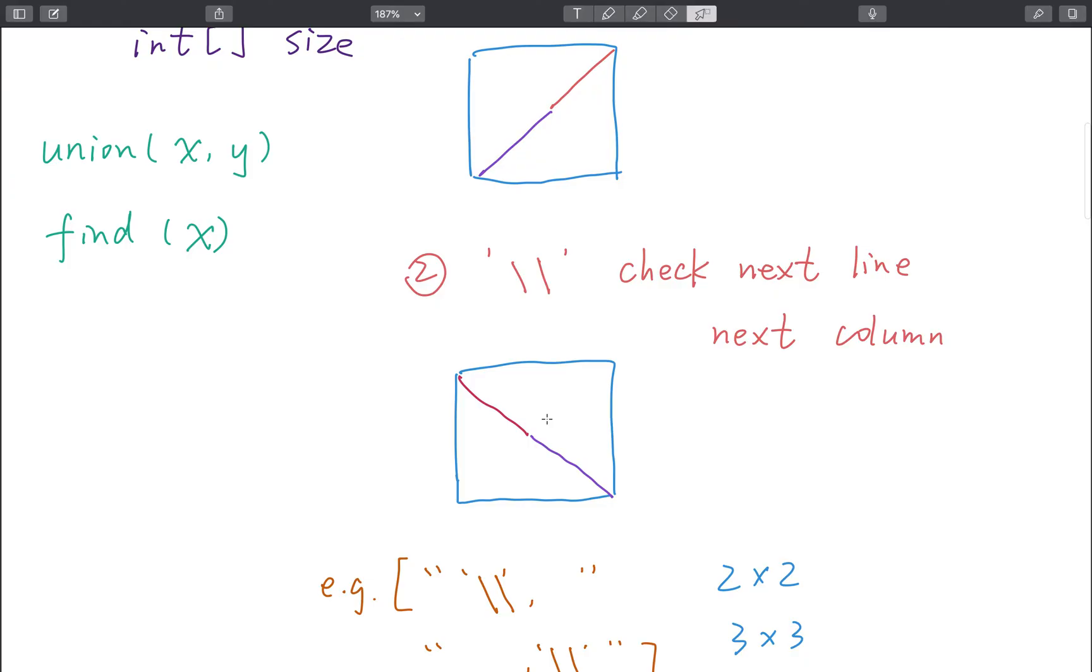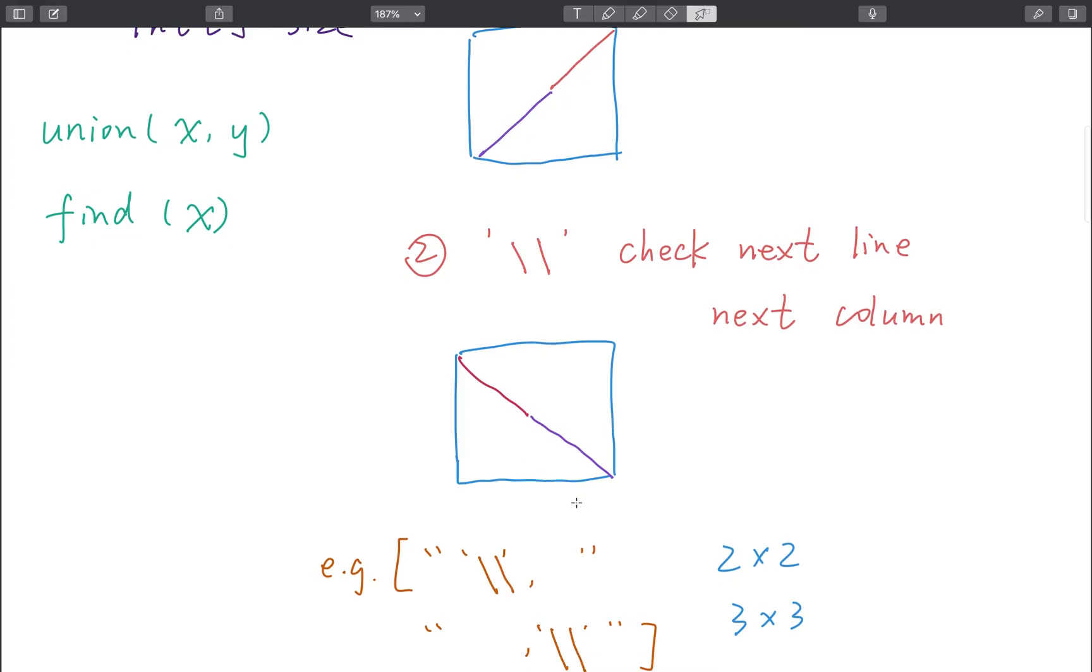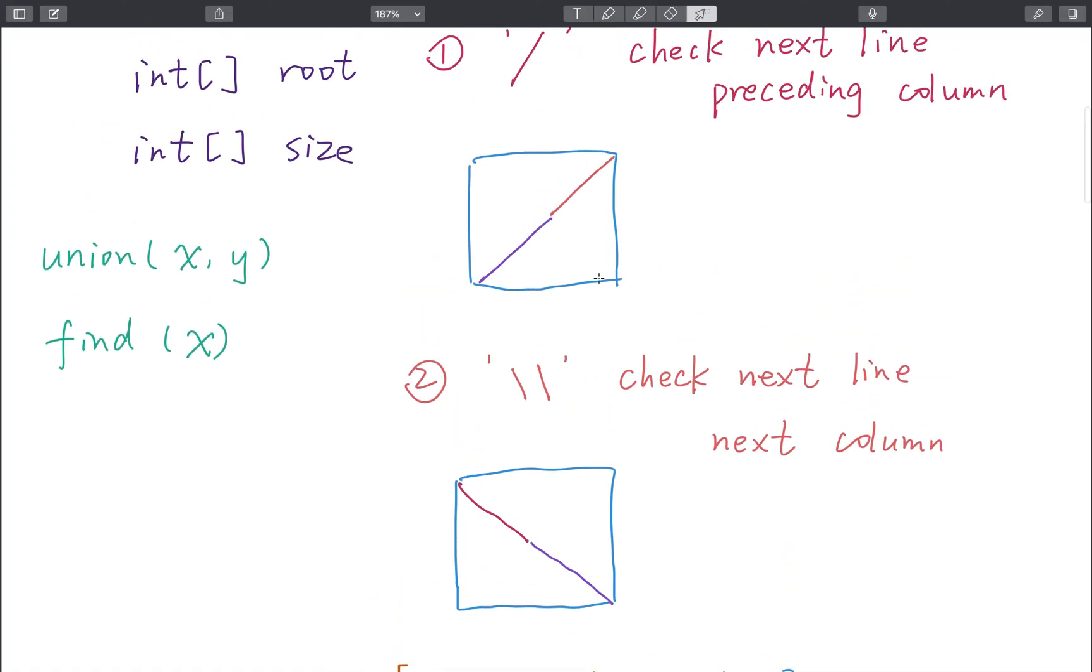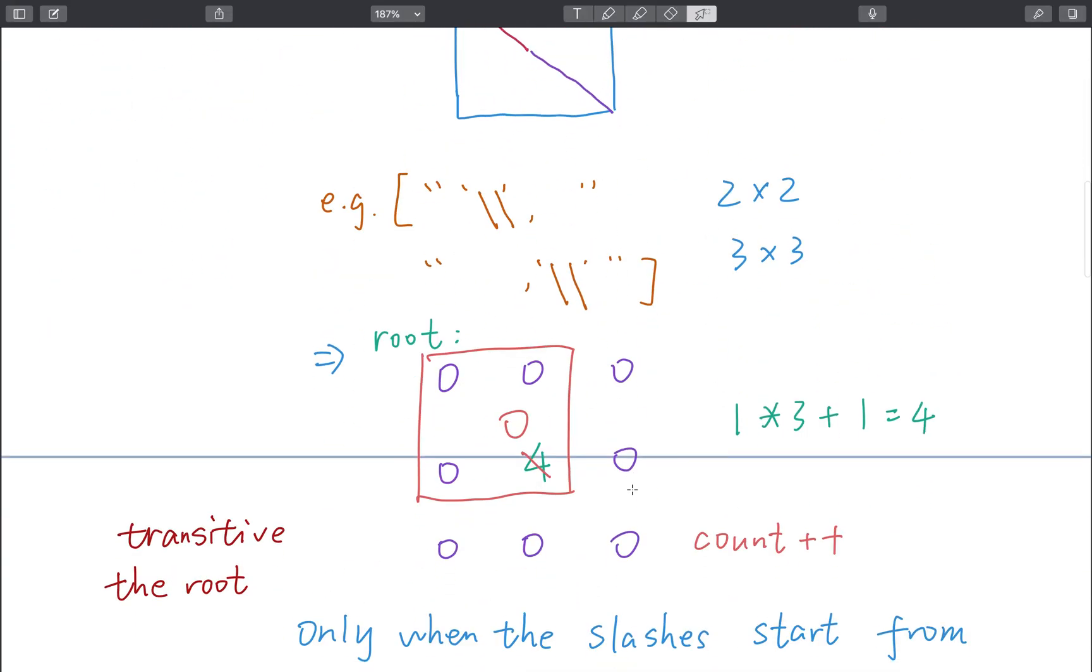The same idea if it's a backslash. We need to check the next line in the next column. If they have the same root, we know it's connected. If they do not have the same root, we need to union them.